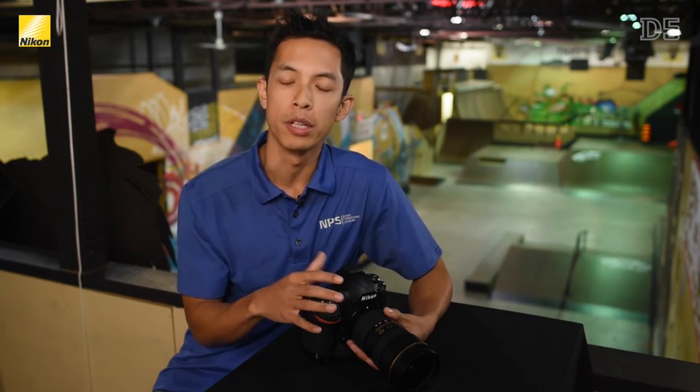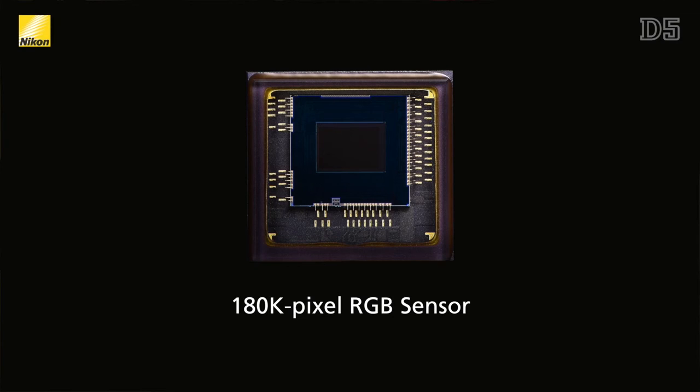Other than the dedicated AF processor, one of the other reasons the autofocus and specifically the face detection on the D5 is much more accurate is because of the brand new metering system. The D5 uses a 180,000-pixel RGB sensor, up from the 91,000-pixel sensor found on the D4S, that is much faster and allows smaller faces to be detected than before. So when you combine a more accurate metering sensor, a faster dedicated AF processor, almost triple the number of active autofocus points, and more customizable options, the new D5 should be the choice for any professional photographer wanting top-of-the-line autofocus performance.